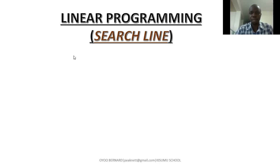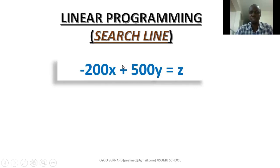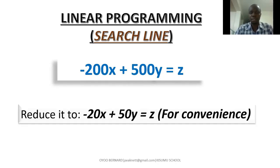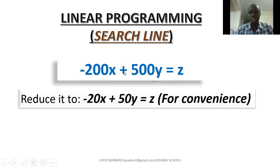First, we have the objective function. So this is what we used previously. Now, what we're going to do is to choose a convenient function based on the region that we already have based on the constraints that we came up with. So we can reduce this so that the function is not way far from the region. So we may decide to divide by a convenient number like 10, for instance, so as to get -20x + 50y = z.